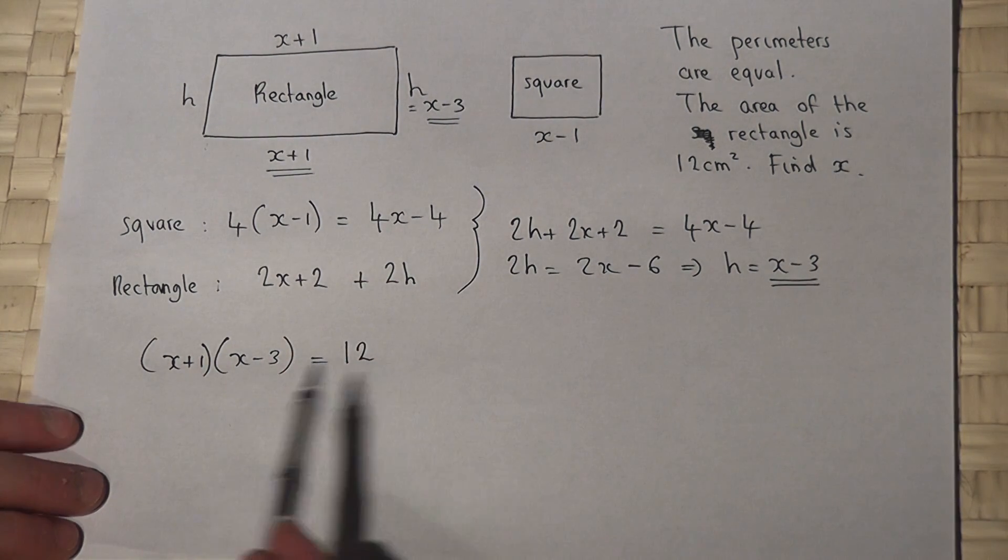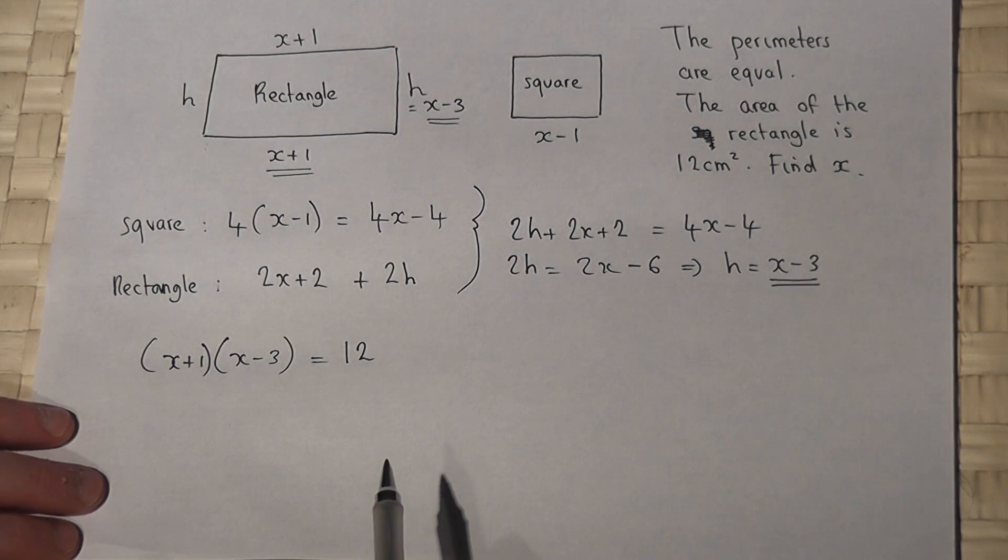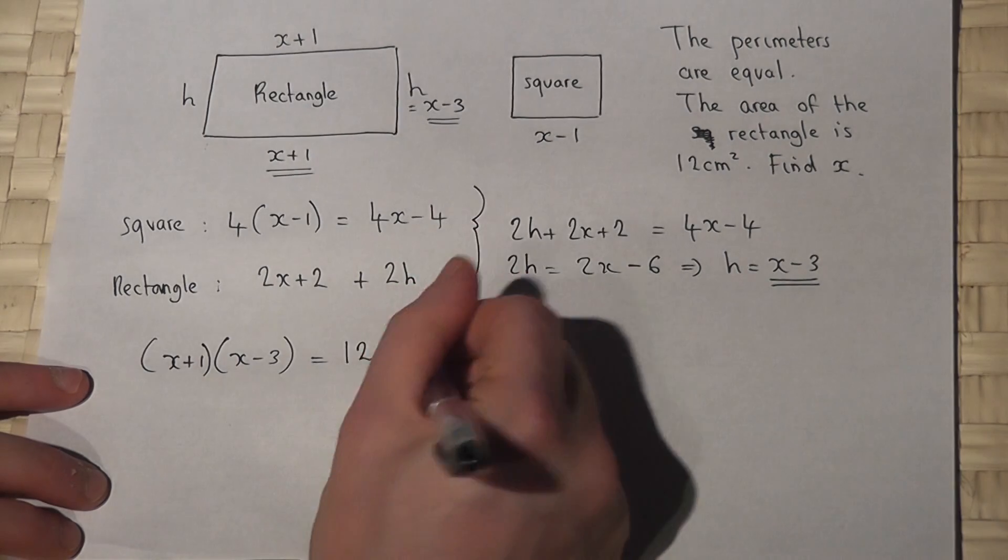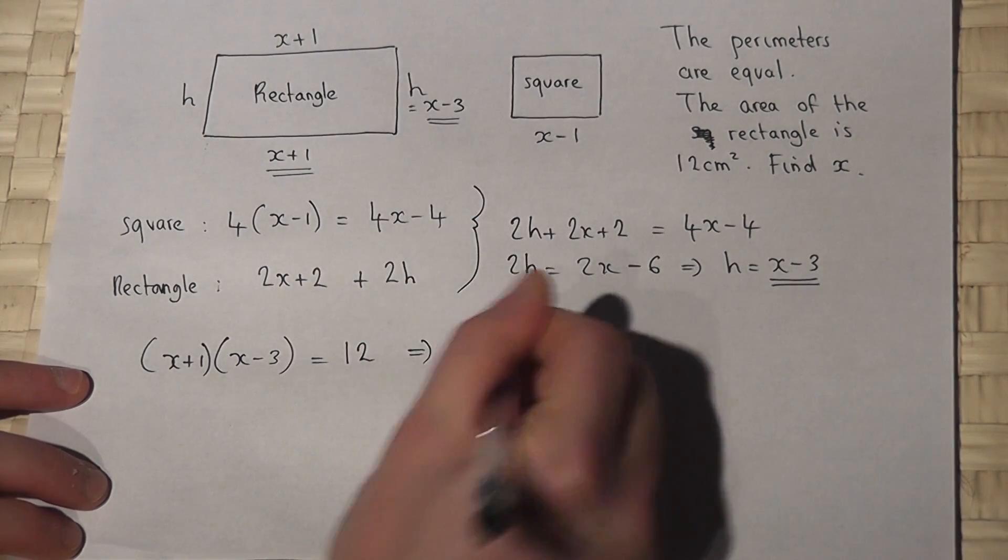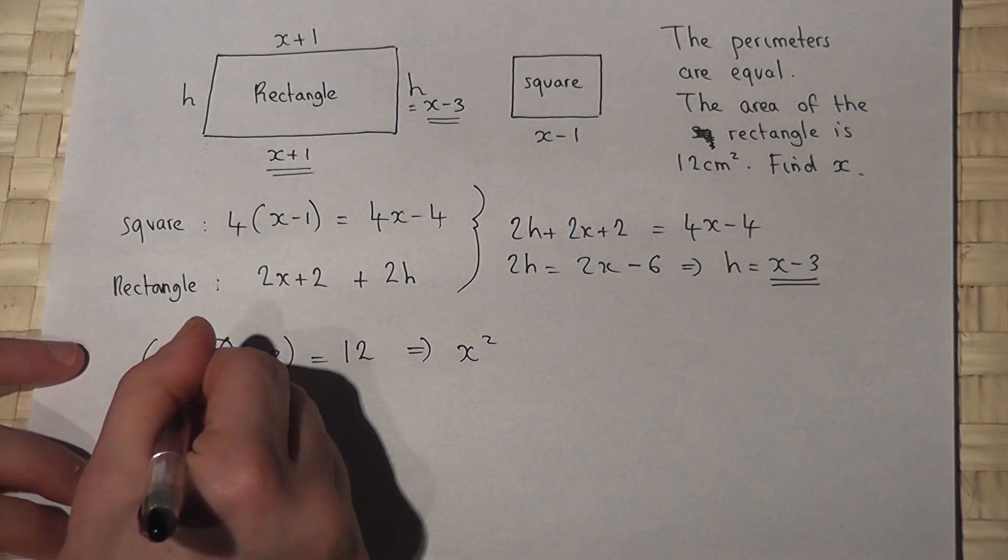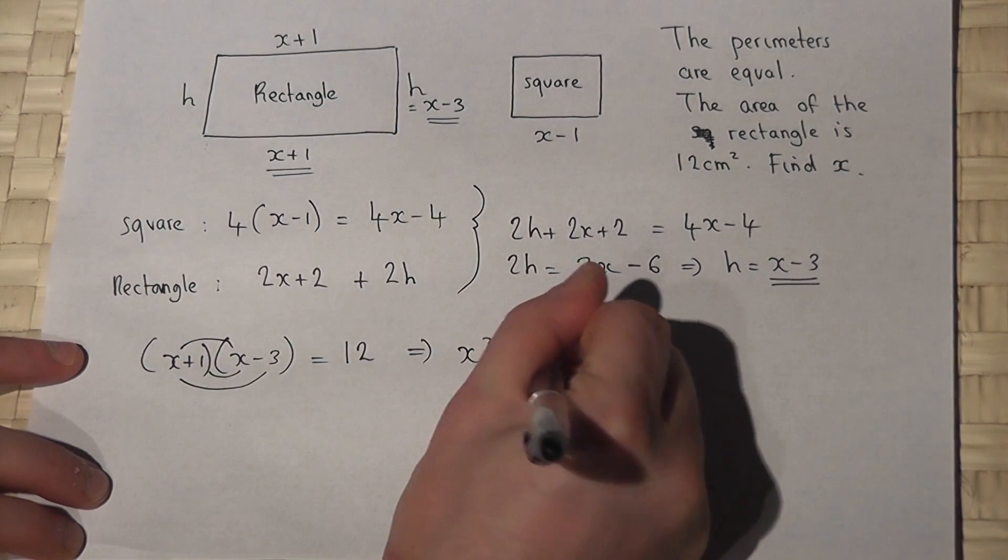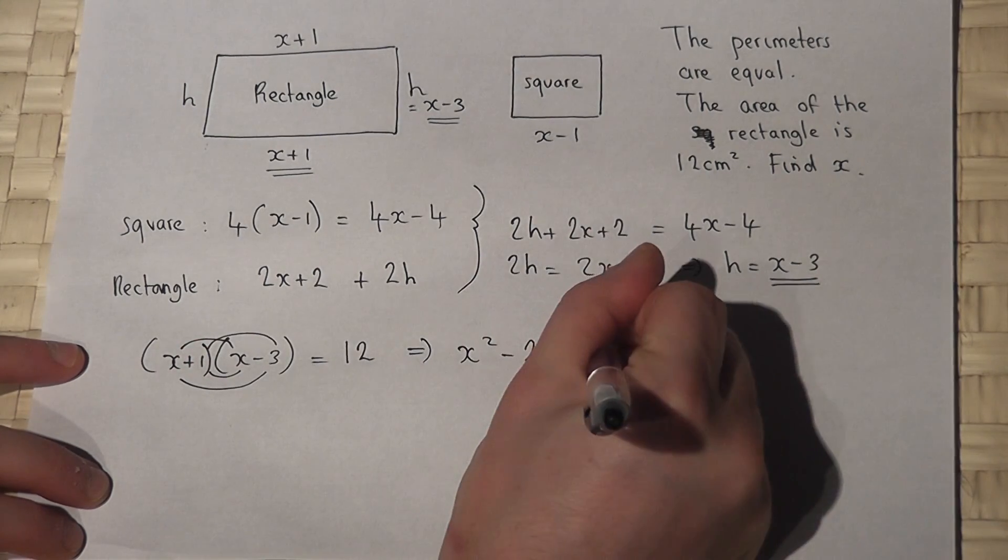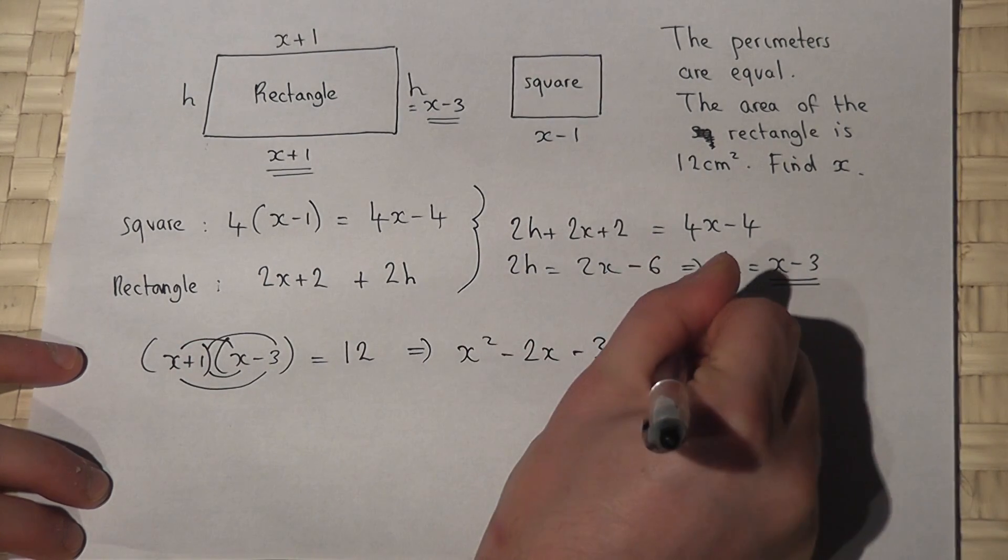So to find x I need to solve this equation. I begin by expanding the brackets. x times x is x squared, x minus 3x is minus 2x, 1 times minus 3 is minus 3, and this must equal 12.